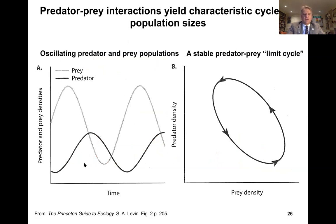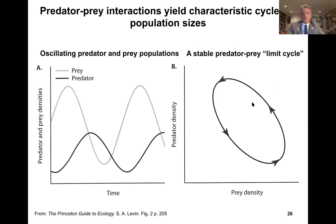We can see this oscillating predator-prey relationship: predator-prey densities on the y-axis through time on the x-axis, and we can hit a limit cycle where there's a stable predator-prey cycle. Looking at predator density versus prey density, they form an oval relationship. As prey density is low, predator density is also declining, facilitating the increase of prey density. As prey density recovers, predator density starts rising again.